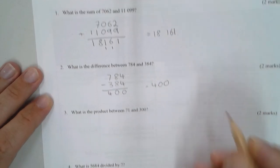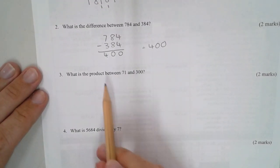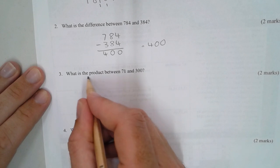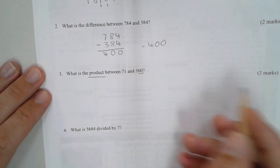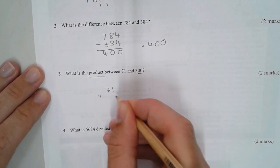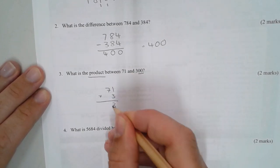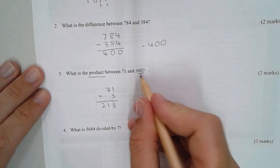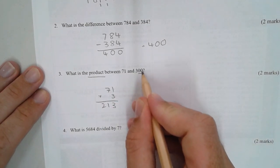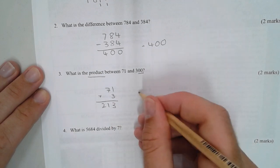Once again, 784 minus 384. This one's fairly straightforward because we can go 0, 0, 4, so our answer is 400. Number three: what's the product? Product means multiply. There's a trick here because it's 300.